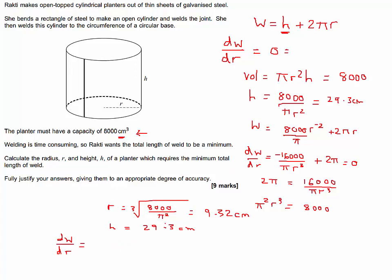So if we rewrite our dW/dr to start with, minus 16000 over pi. I'm going to bring the R cubed up to the top as R to the minus 3. And then we've got plus 2 pi. So we can then get the second derivative by differentiating that. So minus 3 times minus 16000 gives us 48000.